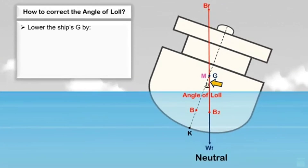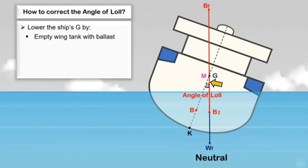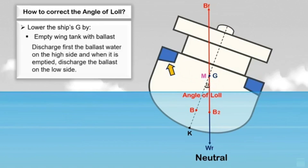To correct the angle of loll, take action to reduce the ship's KG by lowering the ship's center of gravity below the metacenter. If there is a wing tank full of ballast, empty it by discharging first the ballast on the high side. When it is emptied, then discharge the ballast on the low side.